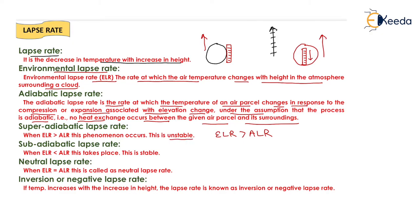The next condition is sub adiabatic lapse rate. When ELR is less than the adiabatic lapse rate — meaning the decrease in temperature of the outside environment is less than the decrease in temperature inside the air balloon — that type of lapse rate is known as sub adiabatic lapse rate, and it is a stable state. When the environmental lapse rate is equal to the adiabatic lapse rate, that state is known as neutral lapse rate.